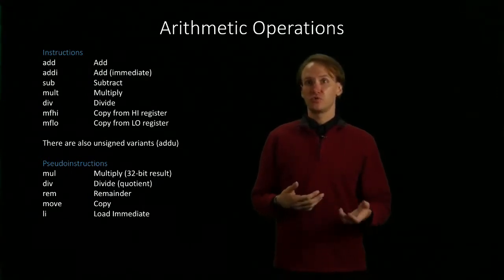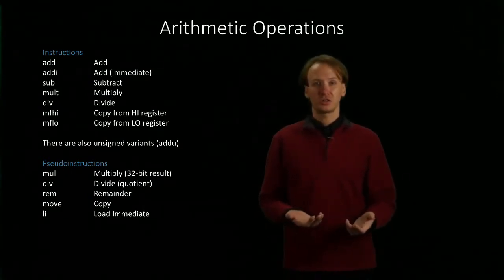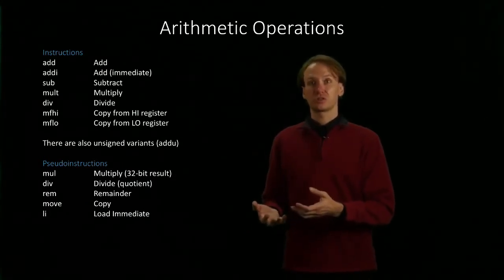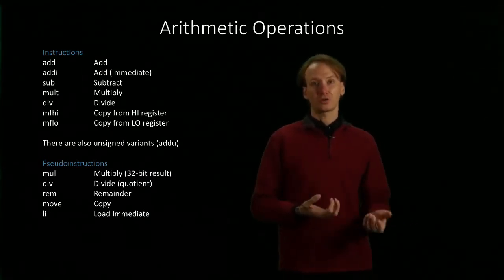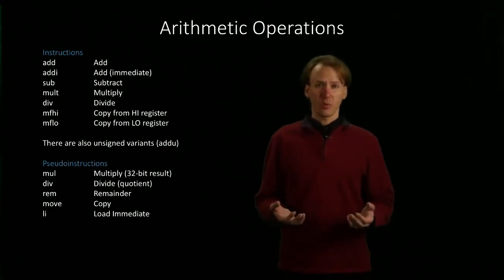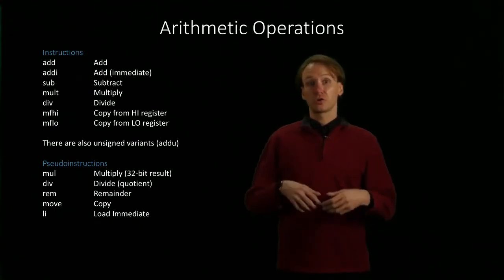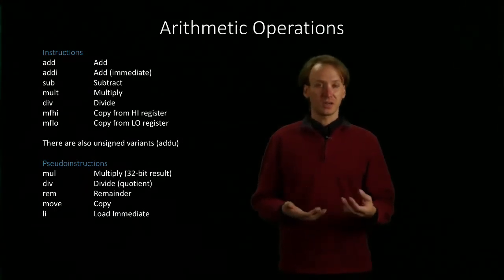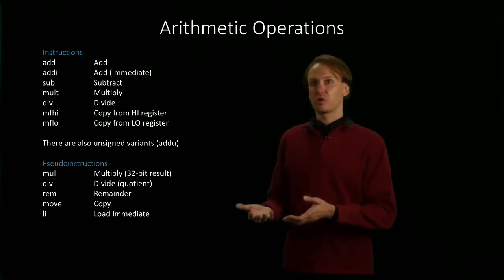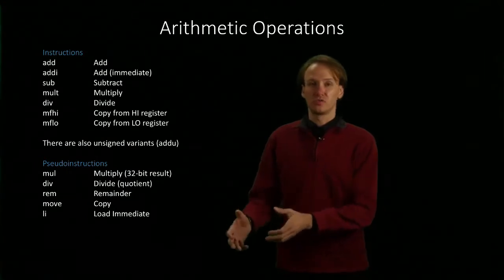Then we can use those move from high and move from low instructions to copy that data out of whichever register we're interested in into someplace where we can actually use them. So aside from using the move from high and move from low instructions, we won't be able to access the high and low registers, so we won't be able to do any further arithmetic on them. So once we're done with our multiply instruction, we'd always want to move data out of there.